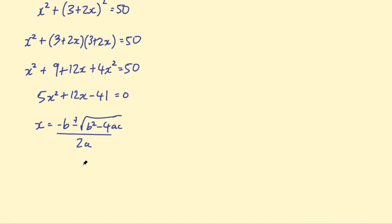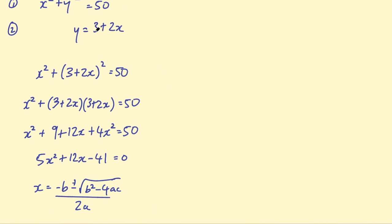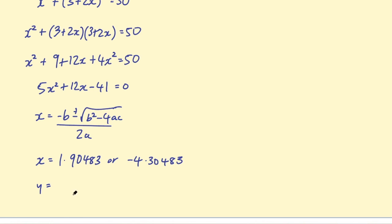You should get x equals 1.90483 or x equals minus 4.30483. Substituting those x values into the second equation y equals 3 plus 2x — multiply by 2 and add 3 — you get y equals 6.80966 or y equals minus 5.60966.